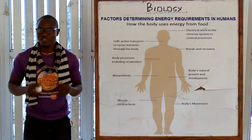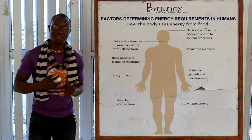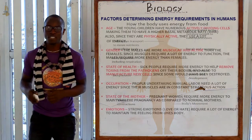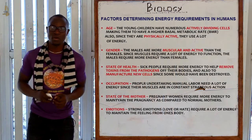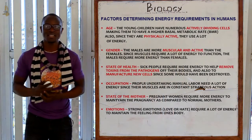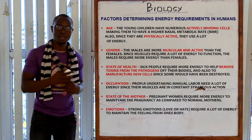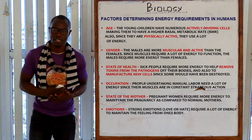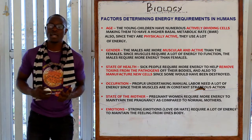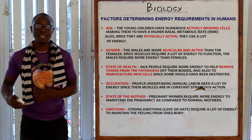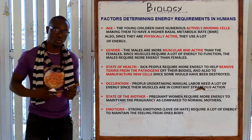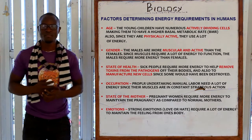Now let's look at the factors that determine the energy requirements in human beings. The first factor is age, whereby young children have very many active dividing cells, hence they have a very high basic metabolic rate, which is called the BMR. They are also physically active, whereby they require a lot of energy to be able to do these activities.